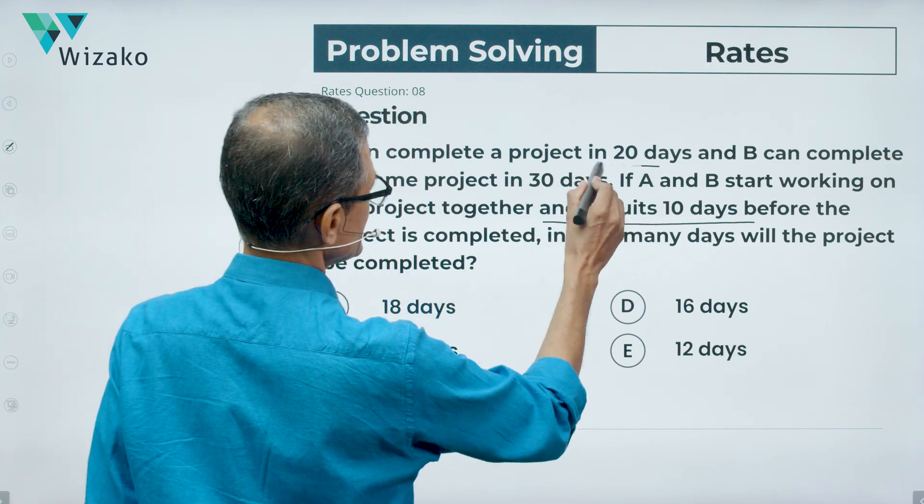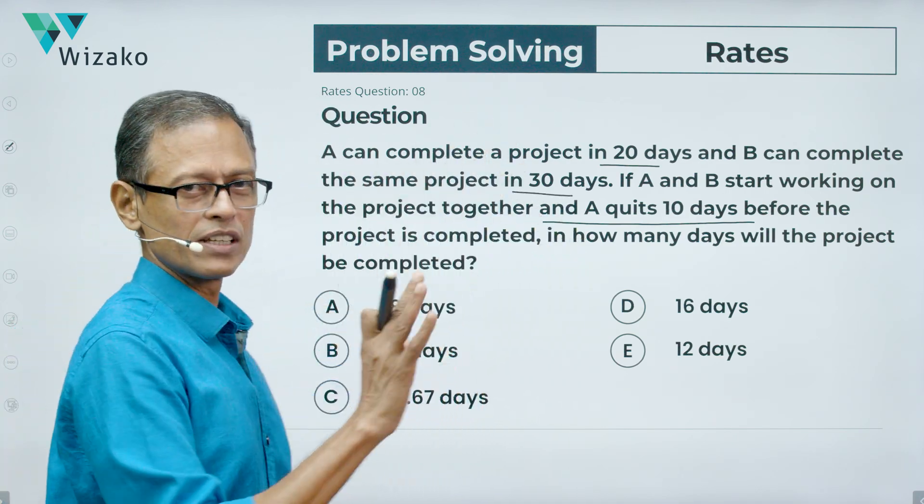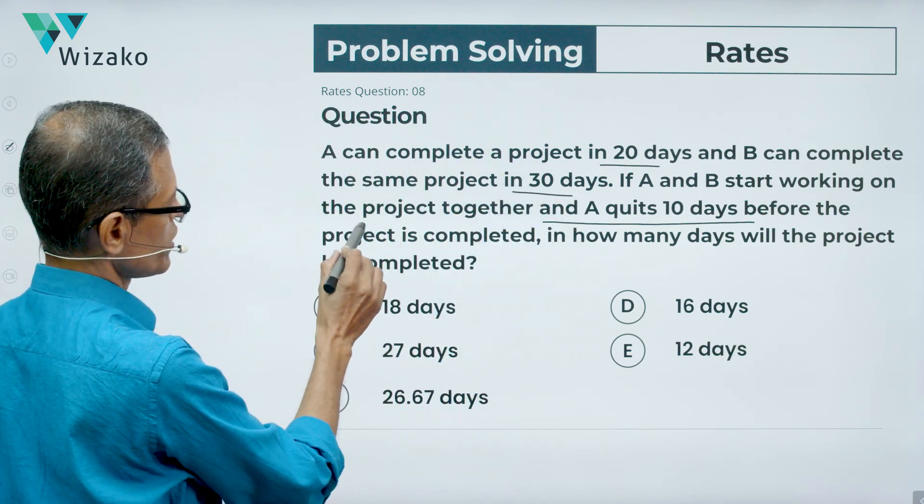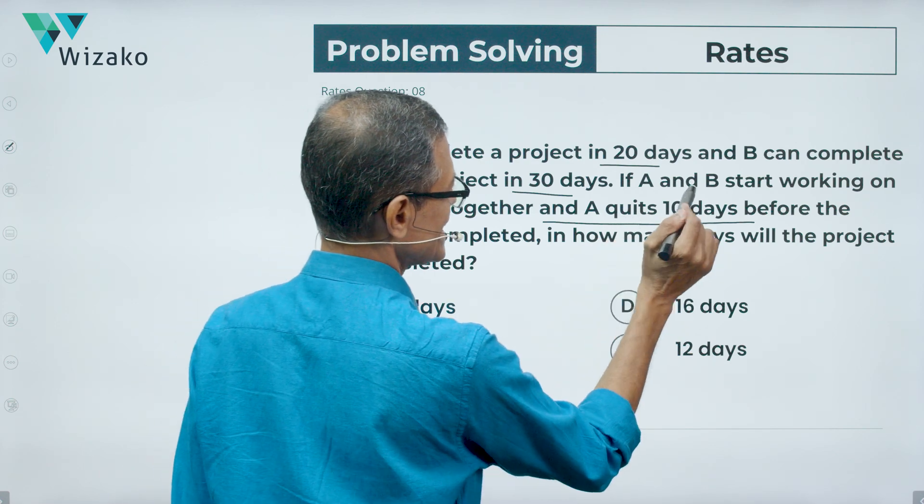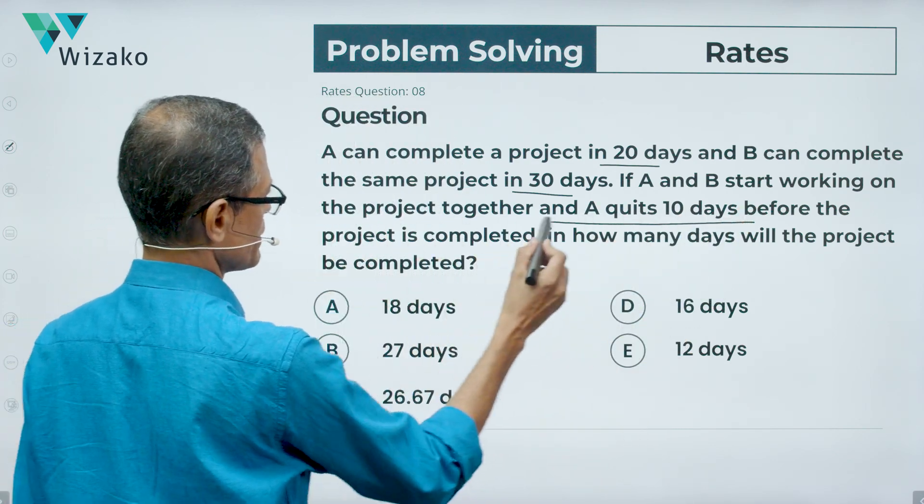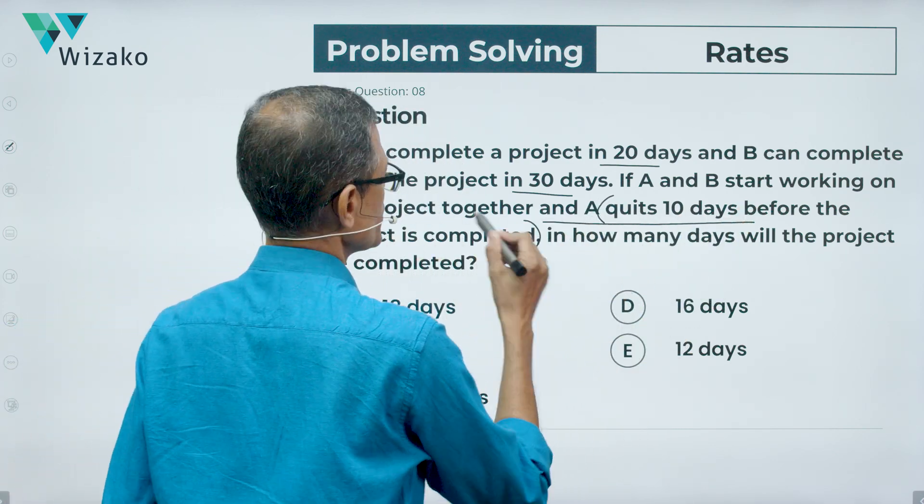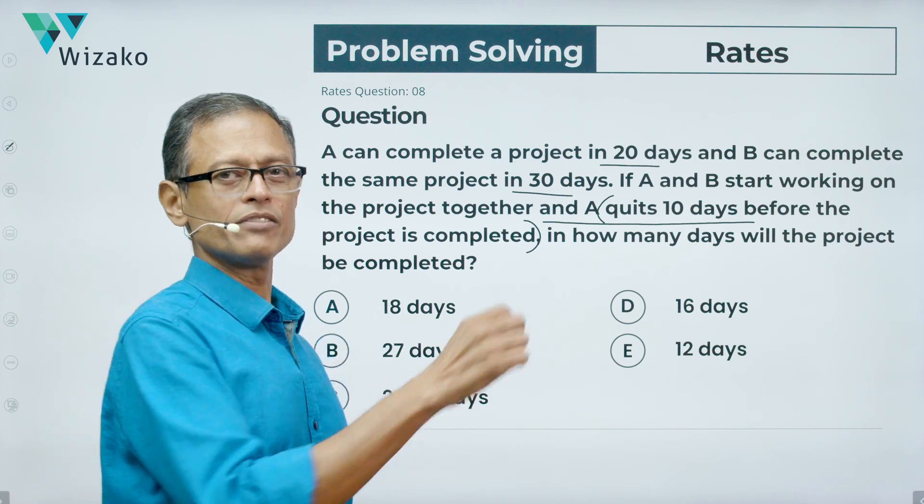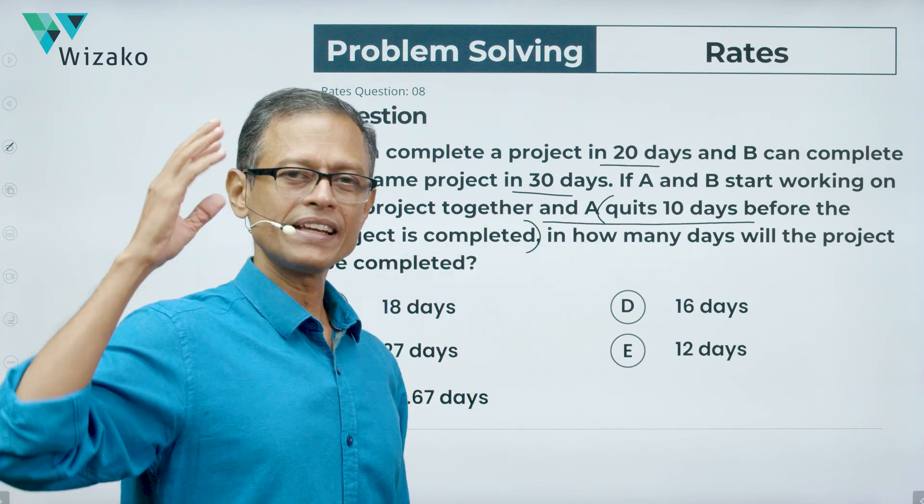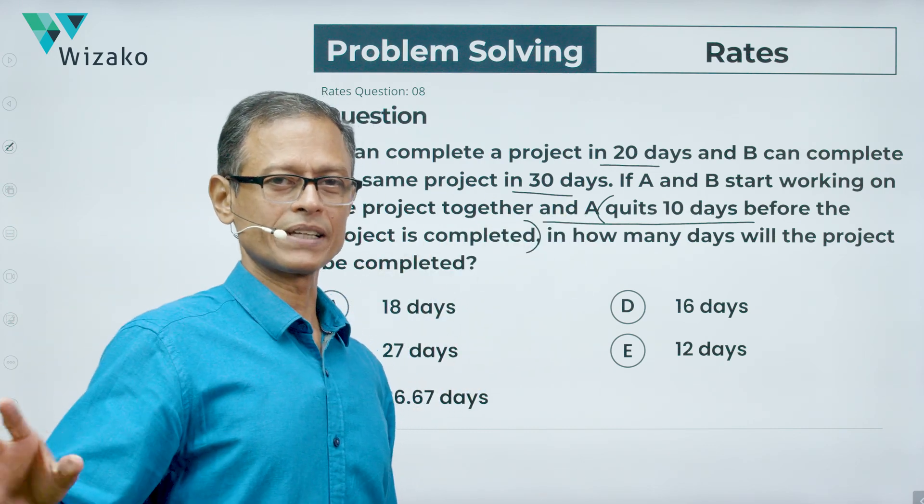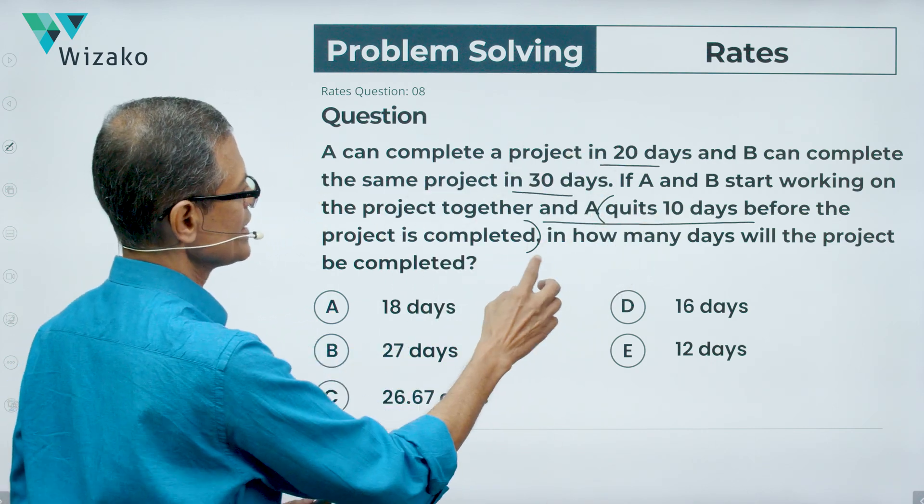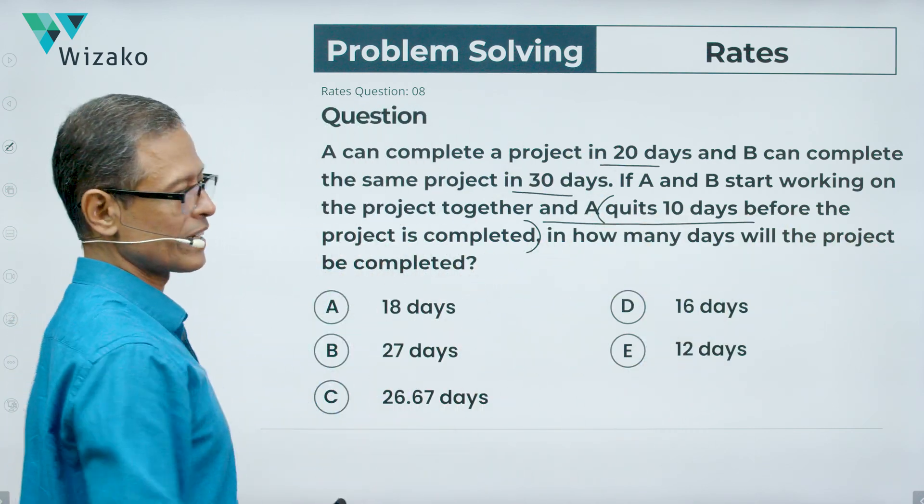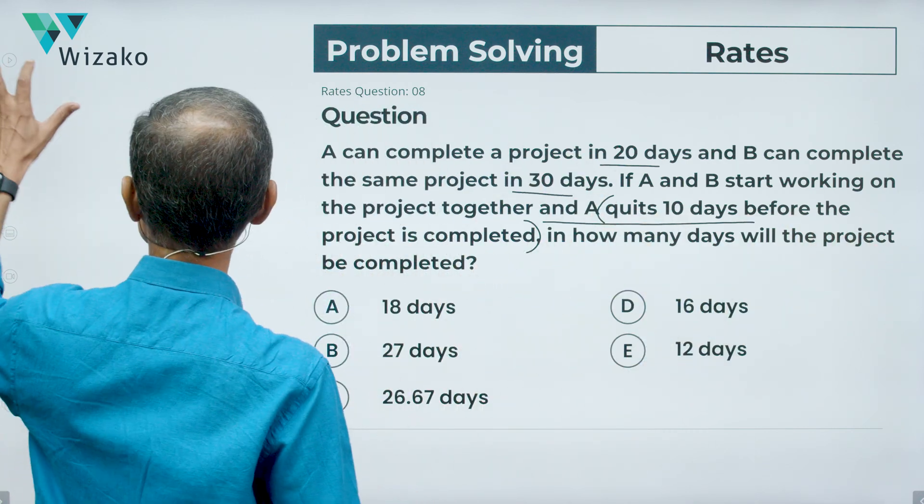A can complete a project in 20 days and B in 30 days. Straightforward information. A and B start working on the project together and A quits 10 days before the project is completed. When A quits, you have to interpret it appropriately from what is stated here. A is quitting 10 days before the project is completed. We'll make sense of it in the next slide. In how many days will the project be completed is what the question is. Let's get started.